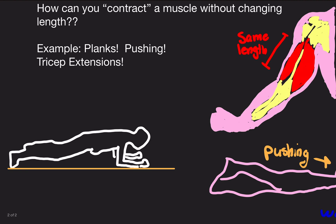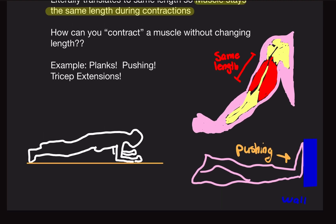Planks are a good example. When you're doing a plank, you'll notice that your abs are burning — after a minute or so, depending on how fit you are. You are not shortening the length of the abs; however, you're using your abs to stabilize yourself. That means you are contracting your abs, but they're not shortening in length. That's an isometric contraction.